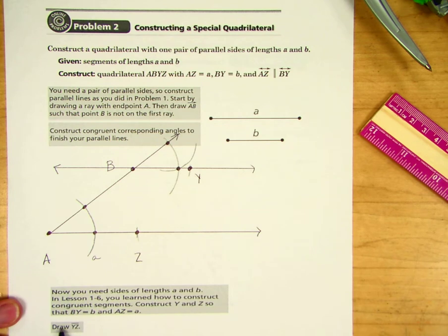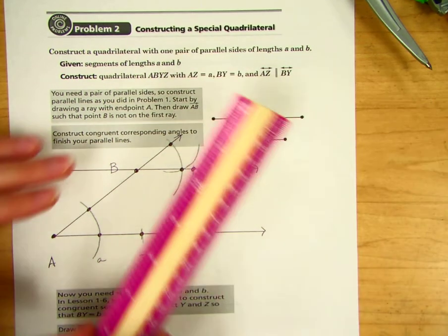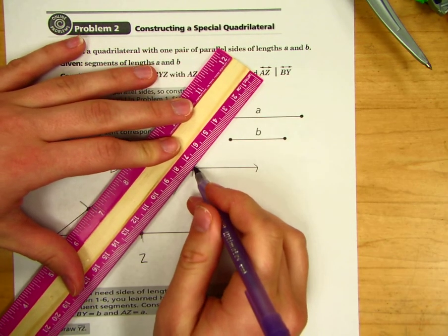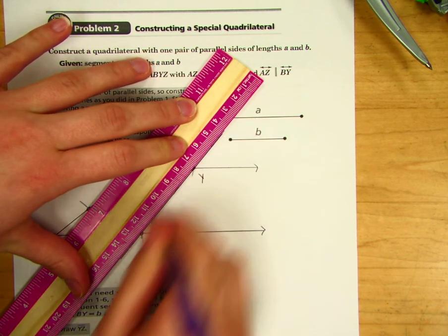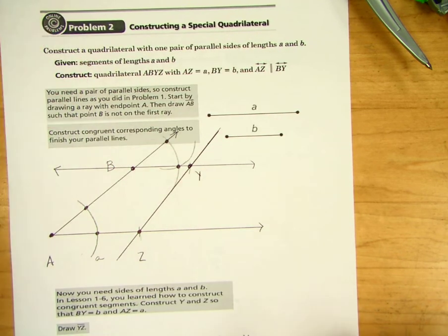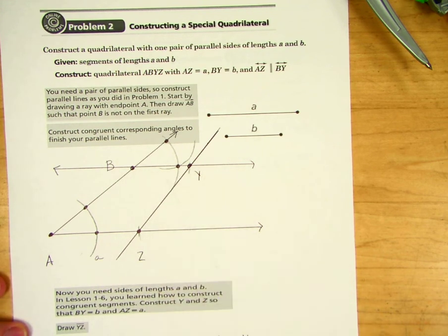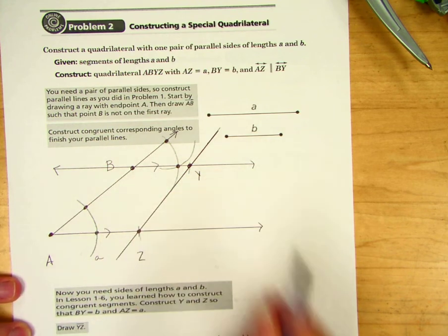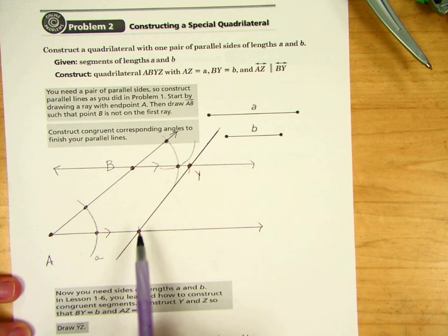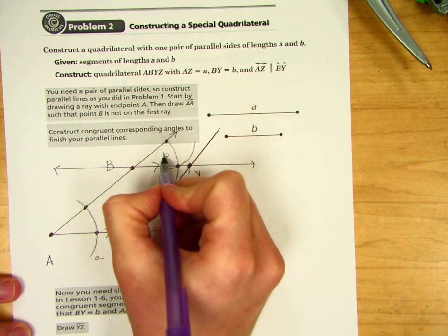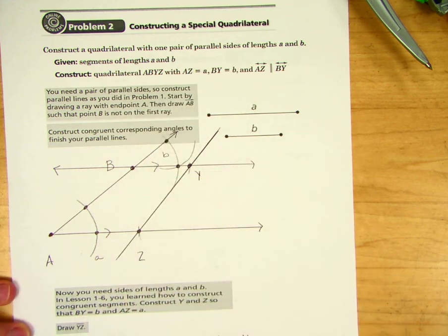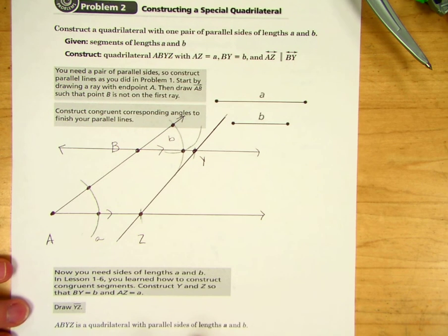Then it says to draw YZ. We're going to connect these two here. A, B, Y, Z is a quadrilateral with parallel sides. These are our parallel sides with lengths A and B. I'm going to mark B. So that's how you construct a special quadrilateral.